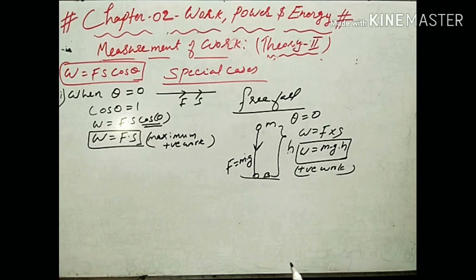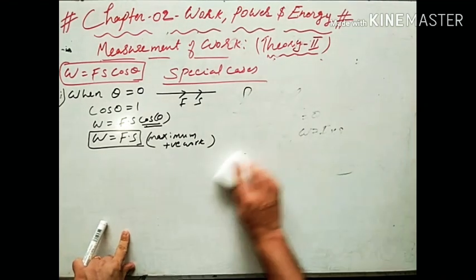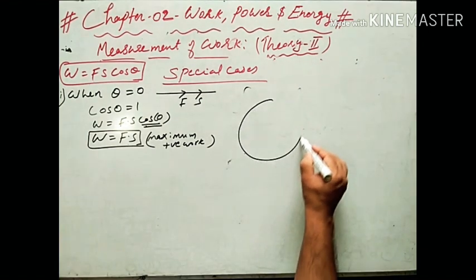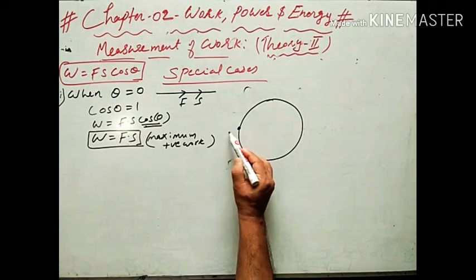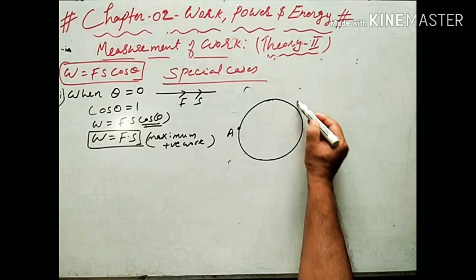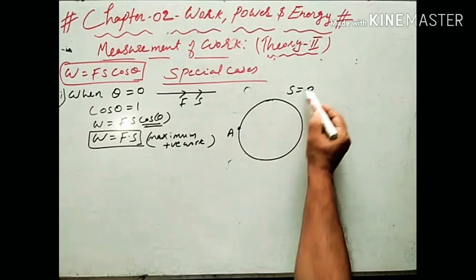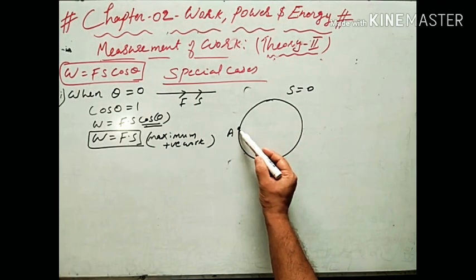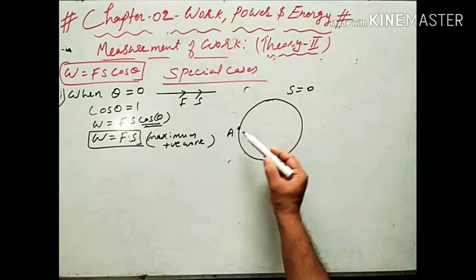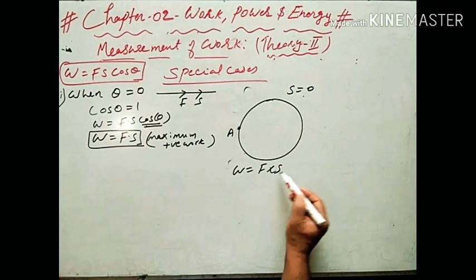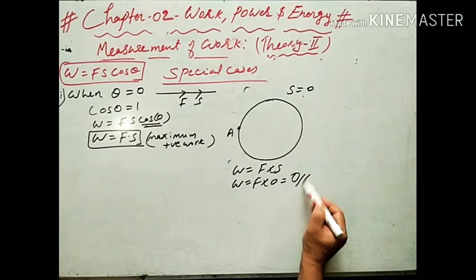But when a body revolves in a circular path, starting from point A and revolving all the way around back to the initial position, there is no displacement of the body. The displacement — the difference between initial and final position — is zero. So S equals 0, and W equals F into 0, giving work done equals 0.